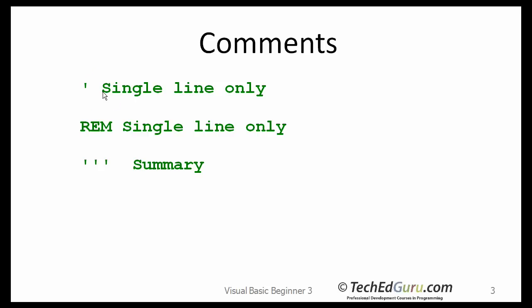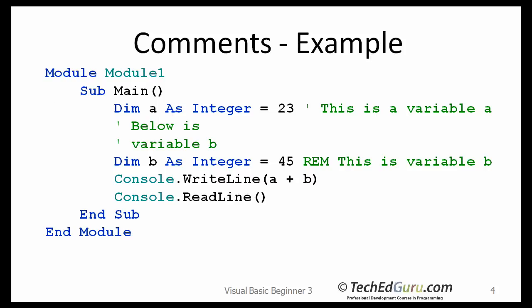You can use either a single quote to start a comment or the REM keyword. Here are few examples showing you how you can comment your code. Although these are not necessarily very useful comments. So we have a comment at the end of a valid statement here. Says this is a variable A, below is a variable B, etc. And here is the one using the REM keyword.